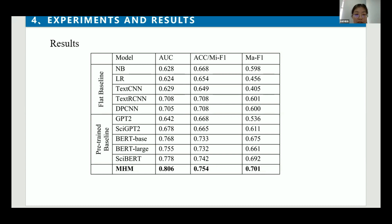Compared to SciBERT, MHM exceeds it on AUC, MAFE, and MIFE metrics respectively. This demonstrates the effectiveness of our model on the task of predicting the acceptance of academic papers. In addition, the decisions predicted by MHM are currently not entirely correct, but still can be helpful as an aid tool for people.